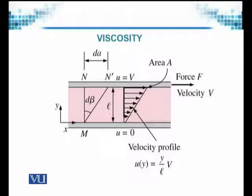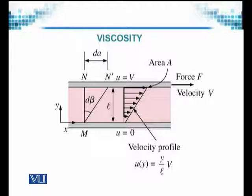As the upper plate starts moving, the fluid — due to viscosity — right at the bottom has a velocity component U in the X direction given the value 0. The fluid is attached to the rigid lower plate, which is solid and not moving, so its velocity is 0.